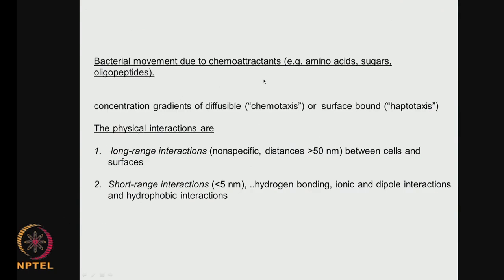Bacterial movement due to chemo-attractants — which could be amino acids, sugars, or oligopeptides — creates a concentration gradient. This could be chemotaxis (diffusible attractants) where the concentration gradient happens because of diffusion, or haptotaxis where attractants are bound to the surface. Physical interactions are long-range interactions — greater than 50 nanometers between cells and surface — and are not very specific. Short-range interactions are less than 5 nanometers and include hydrogen bonding, ionic dipole interactions, and hydrophobic interactions. Two types of gradients — from chemotaxis and haptotaxis — are why bacteria start moving towards surfaces.